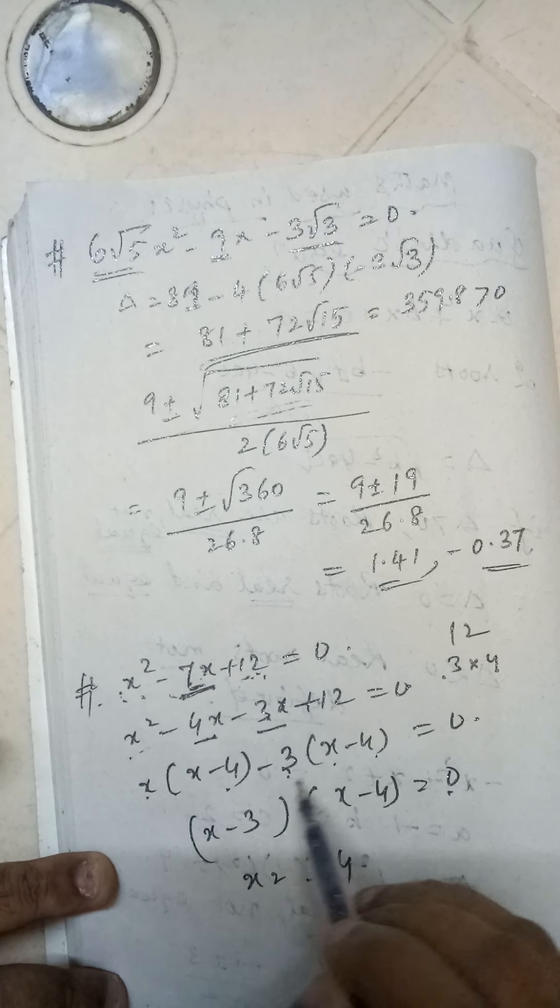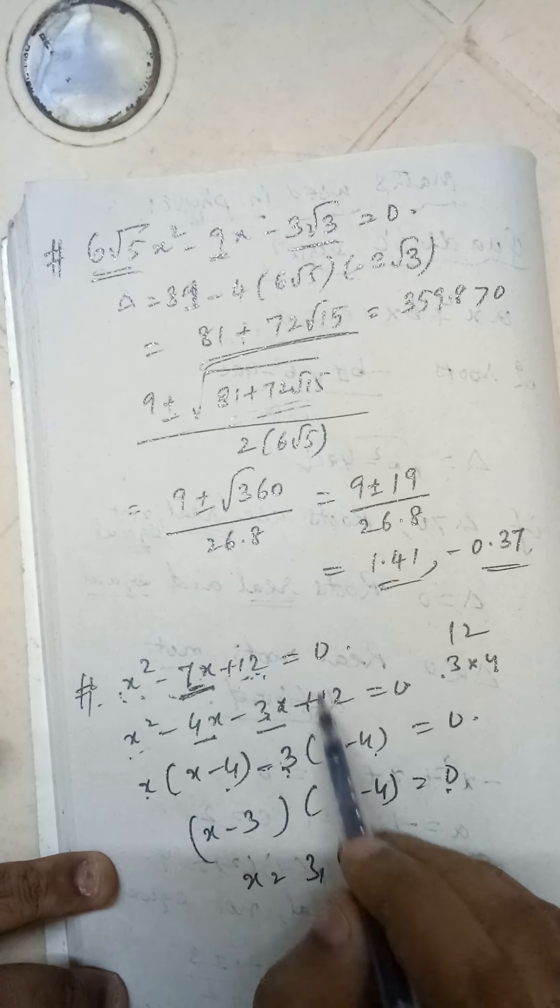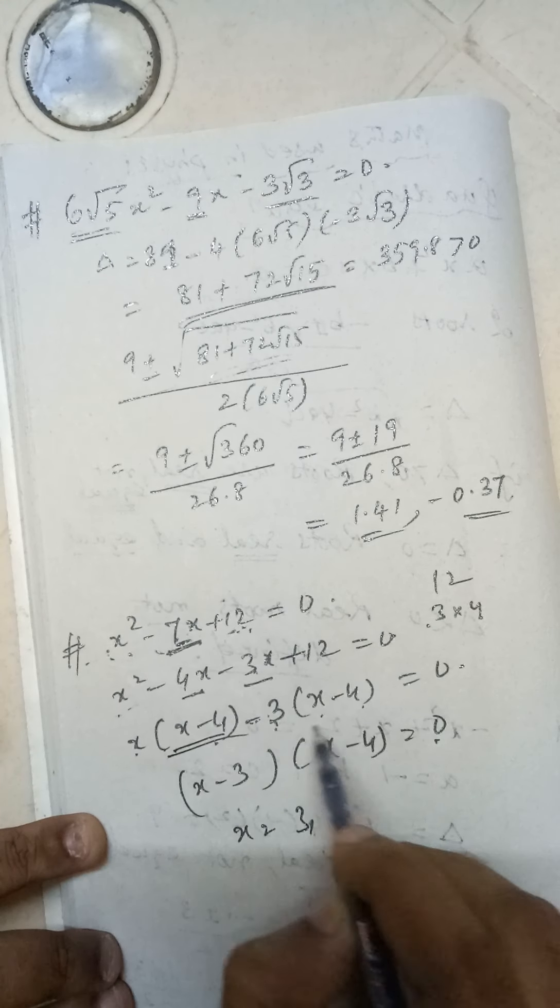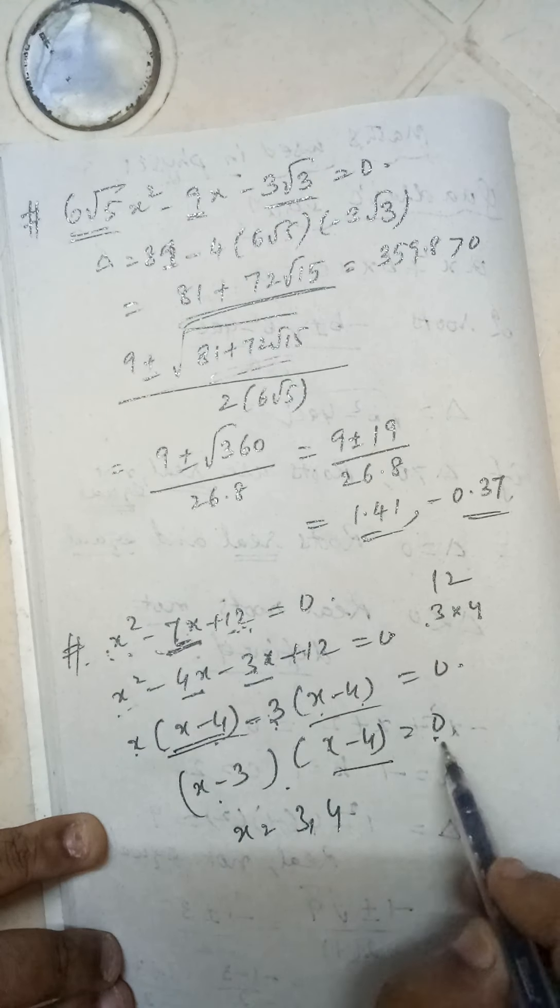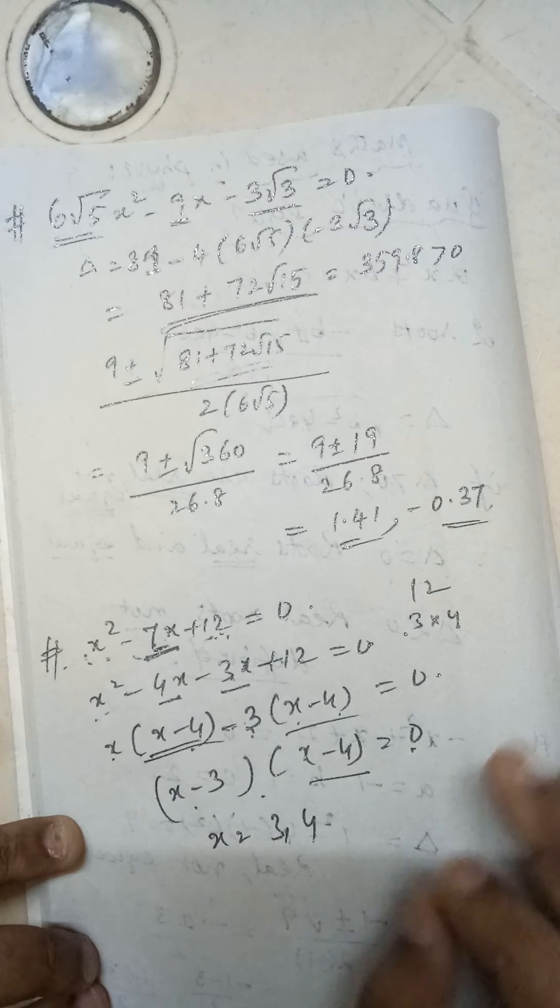So if you take (x - 4) as common, you get (x - 3)(x - 4) = 0, or x = 3 and 4. So you got two roots.